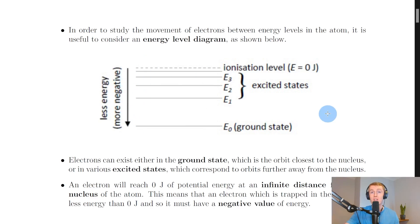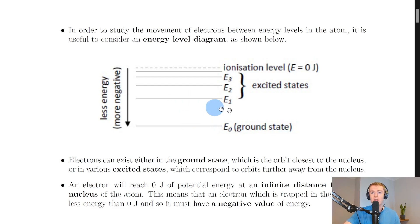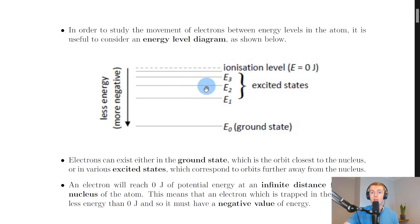A good way to think about this is in terms of potential energy between the negatively charged electrons and the positively charged nucleus. Electrons in the ground state are closest to the positively charged nucleus — close to where they want to be due to electrostatic attraction — so there's not as much electrostatic potential energy. However, electrons in a higher energy level like E1 have greater potential energy because they are further from the nucleus. The same applies to E2 and E3 — electrons in E3 have greater potential energy than those in E1 or E0 because they are furthest from the positively charged nucleus.